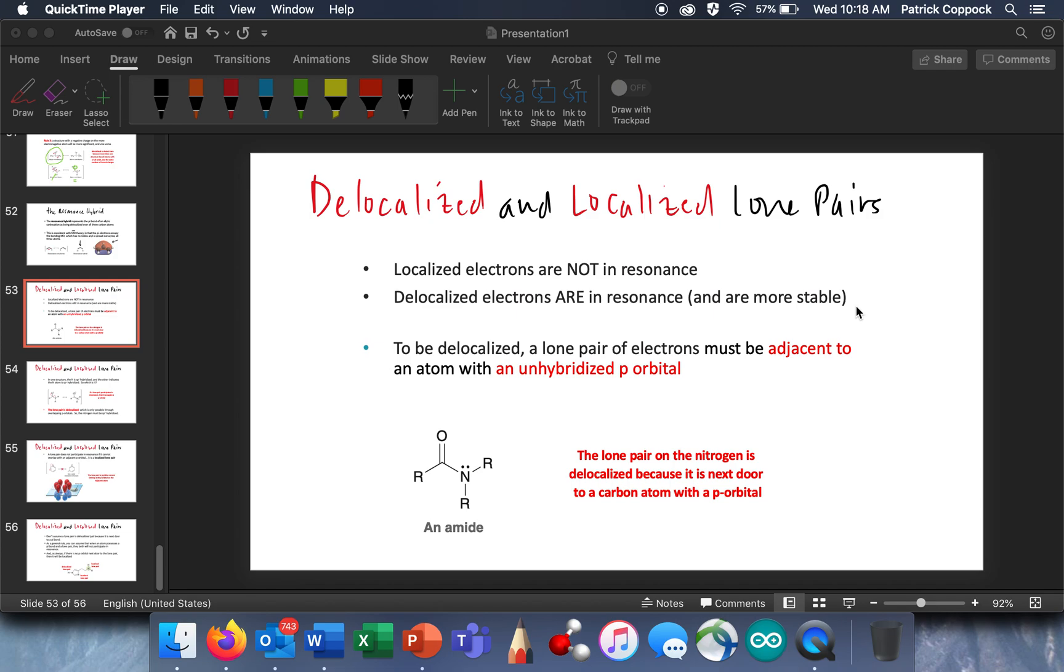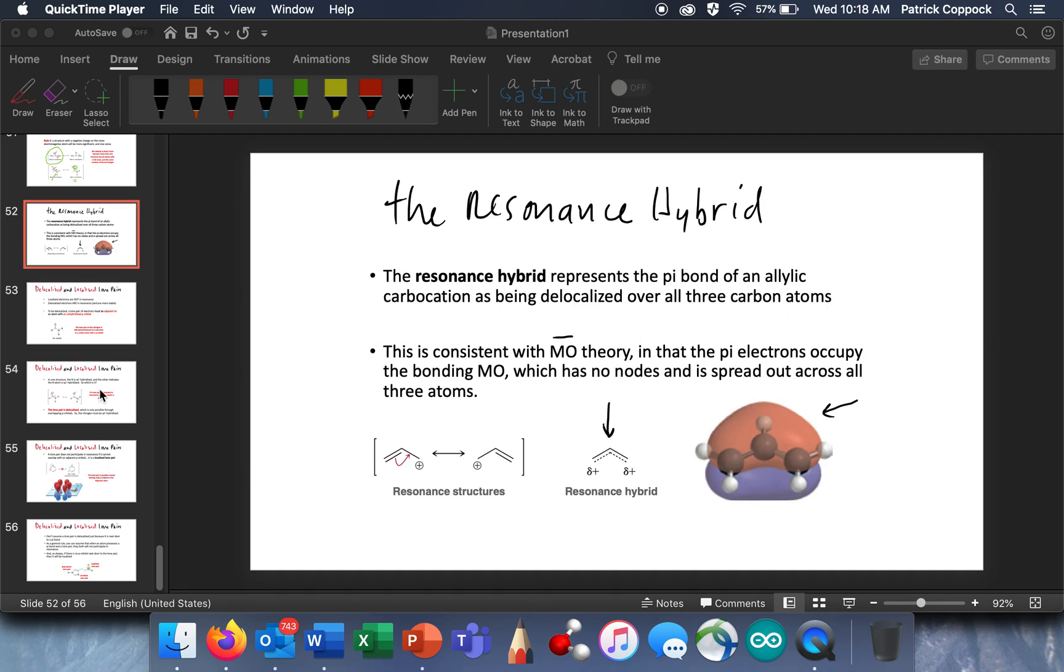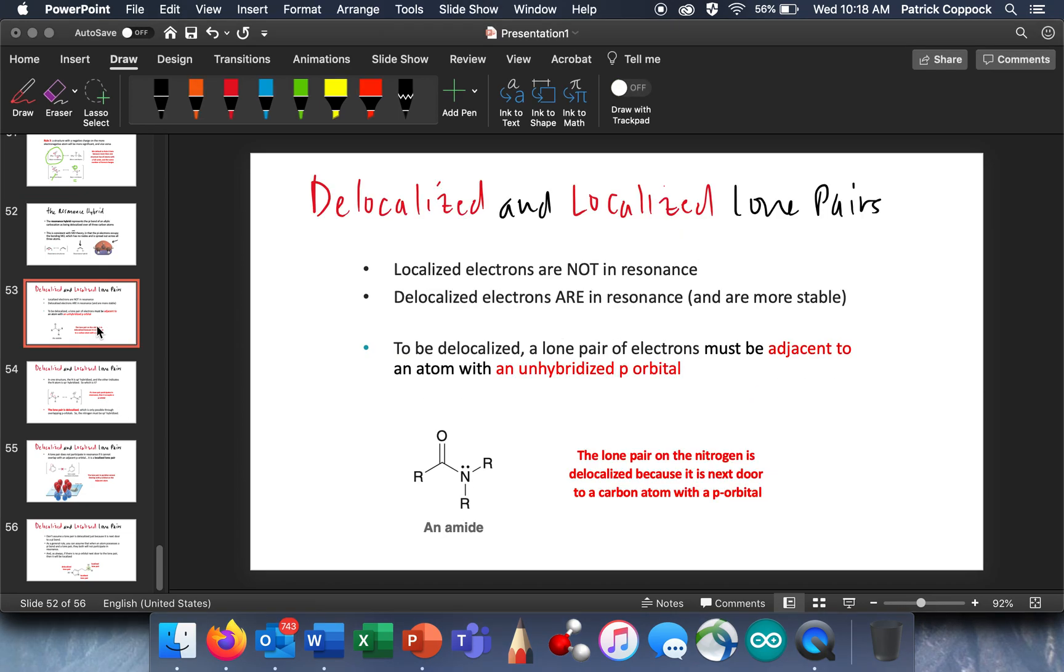And you'll be able to recognize what is a delocalized and a localized pair of electrons, but it's going to take some thought. First of all, to be delocalized, a lone pair of electrons has to be adjacent to an atom with an unhybridized p orbital. Has to be adjacent to an atom with an unhybridized p orbital. So here I've got a pair of—let me get my marker out here.